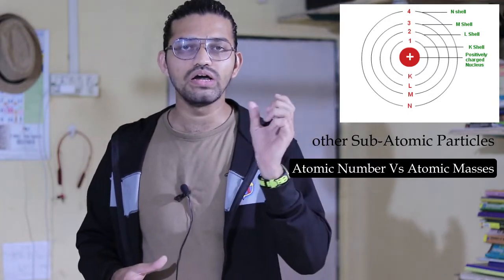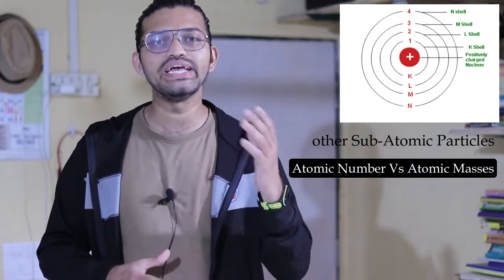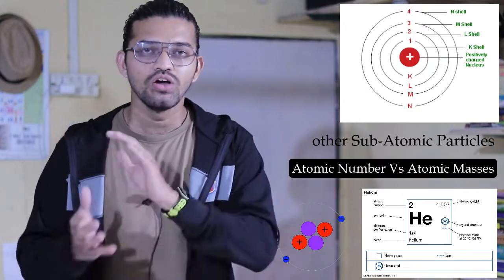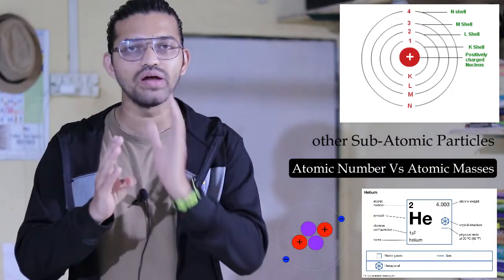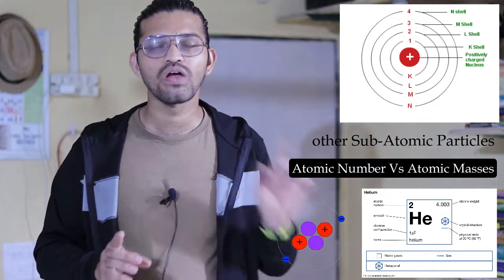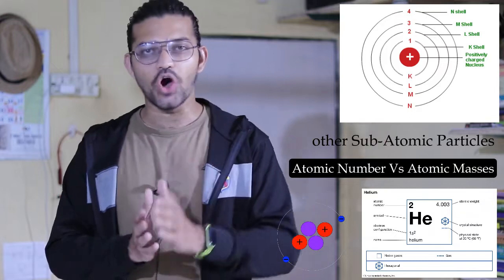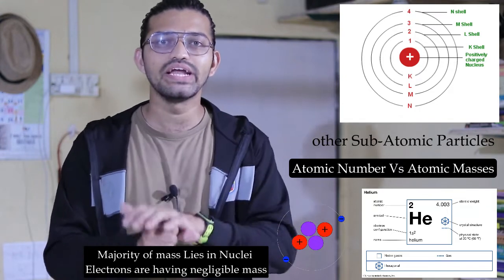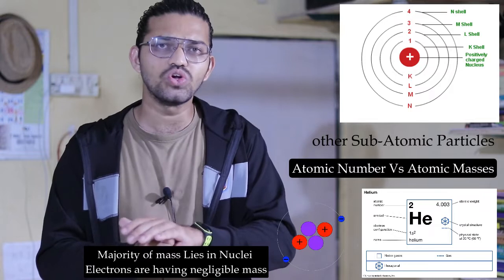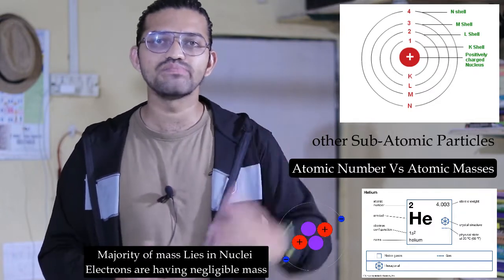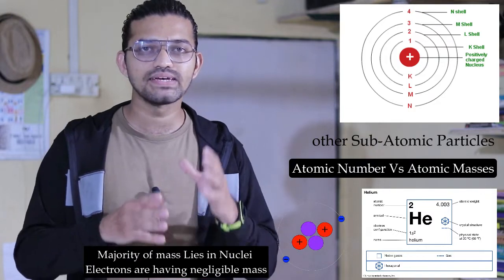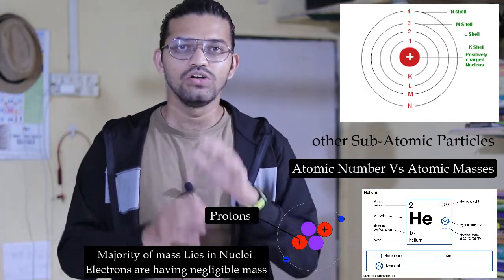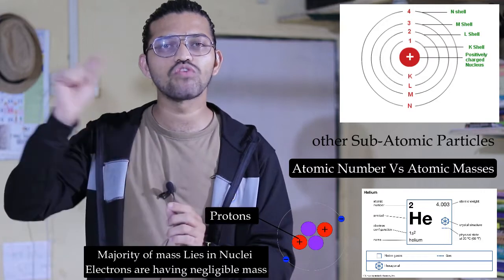In the case of the helium atom, its atomic number is 2 whereas its atomic mass is 4 amu. The atomic number represents the number of protons. In an atom, the majority of the mass is accumulated at its center in the nucleus. The electrons revolve in orbits and they are negligible in mass. So most of the mass lies at the center, and at the center we have the protons.